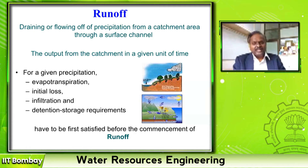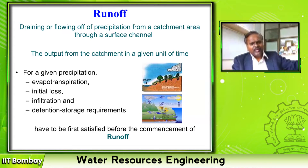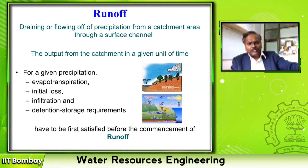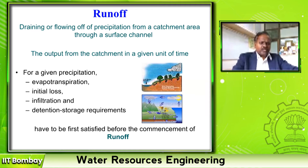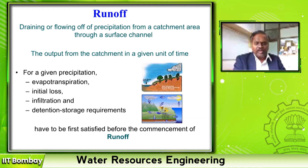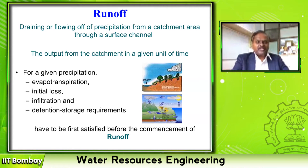That means it is not directly rainfall to runoff. It is a rainfall process, then all the losses, then the water moves as a sheet of water in the direction of the same slope. When two different slopes meet together, they merge and take a third slope which we call runoff. When that third slope is a prominent structural course, we call that as stream flow.